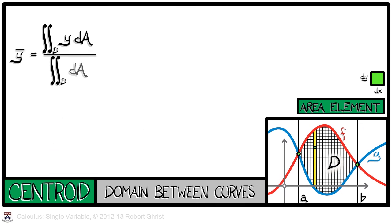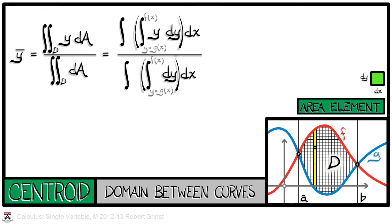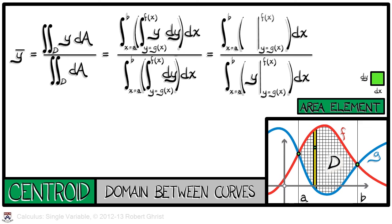You might think that the same formula holds for y bar, but it's a little bit different. There is one point at which these computations differ dramatically. That is, in the numerator, when we first integrate with respect to y, we're integrating y dy instead of x dy. Of course, that integral is easy enough. It's y squared over 2. But it makes the final formula qualitatively different.